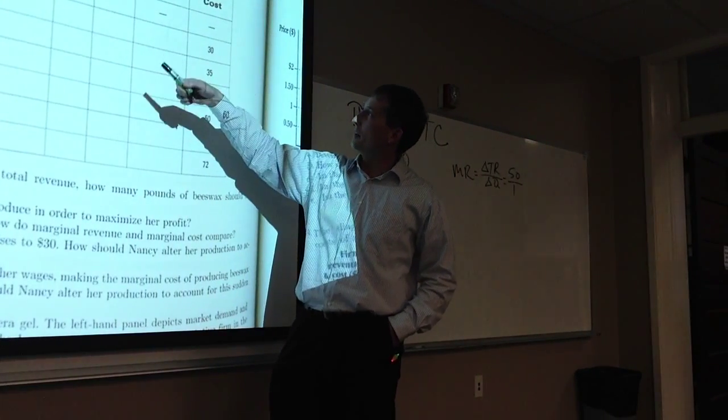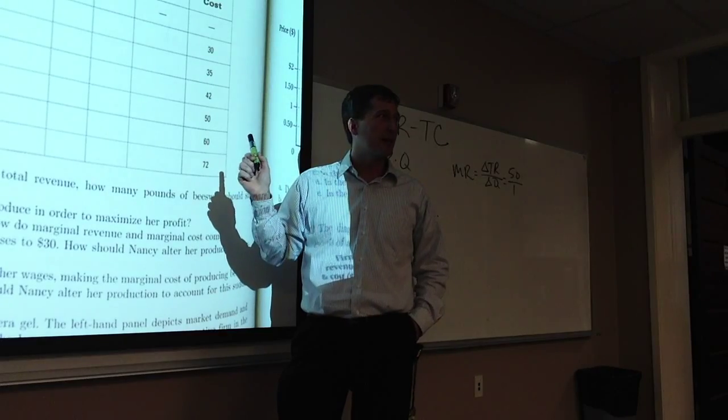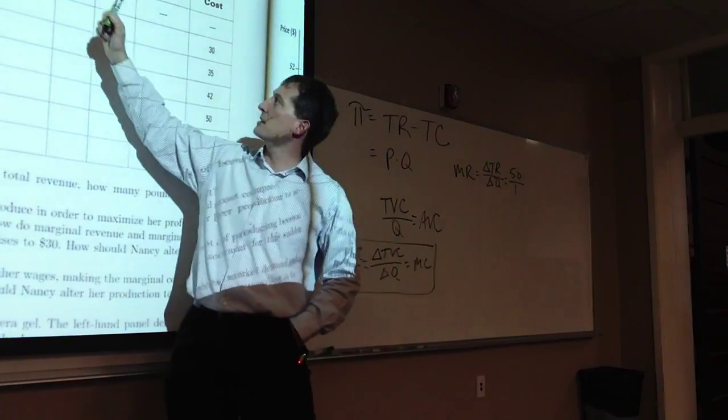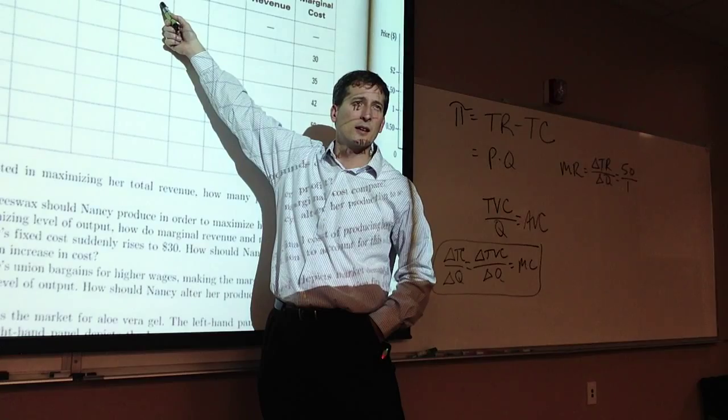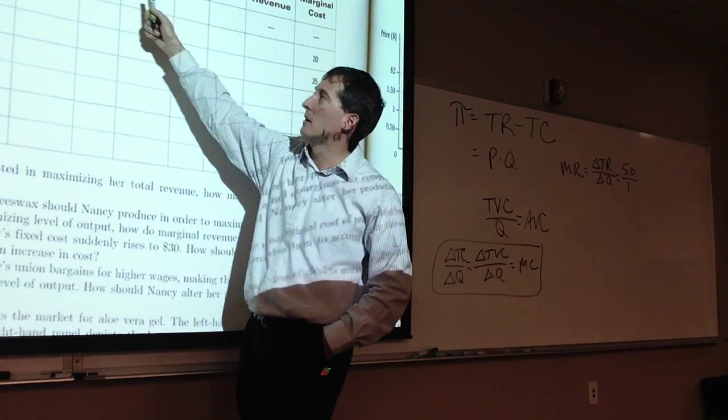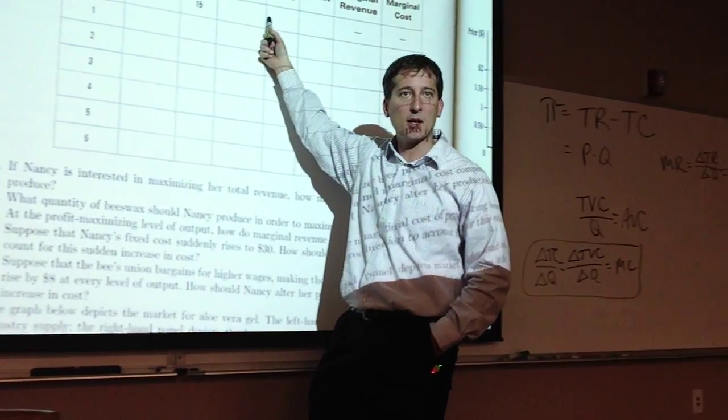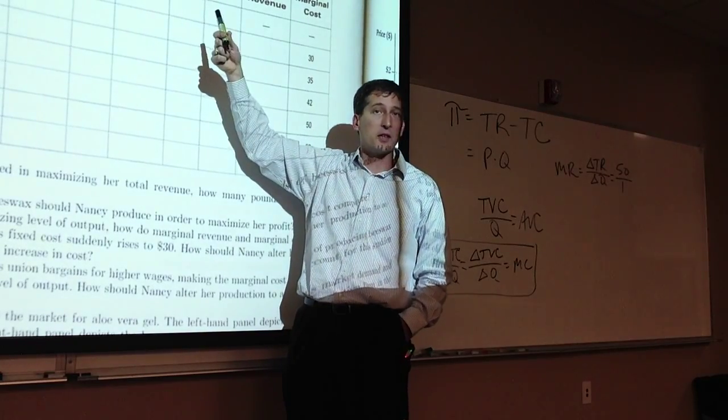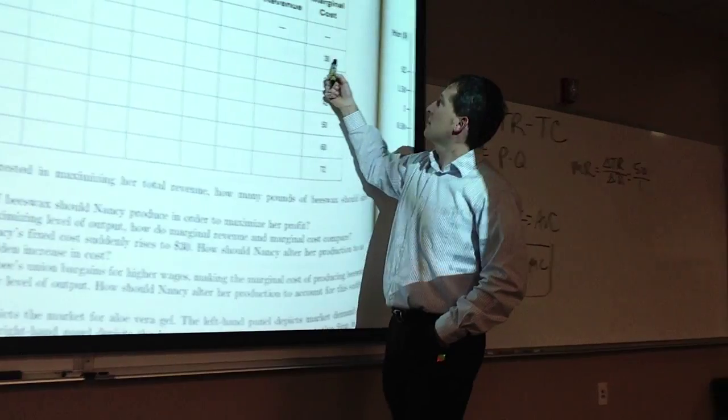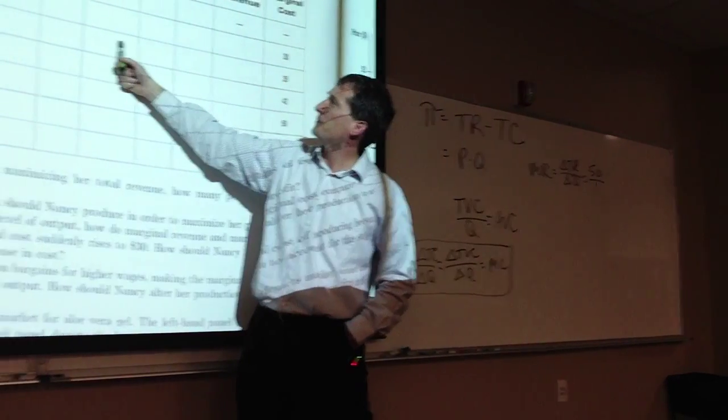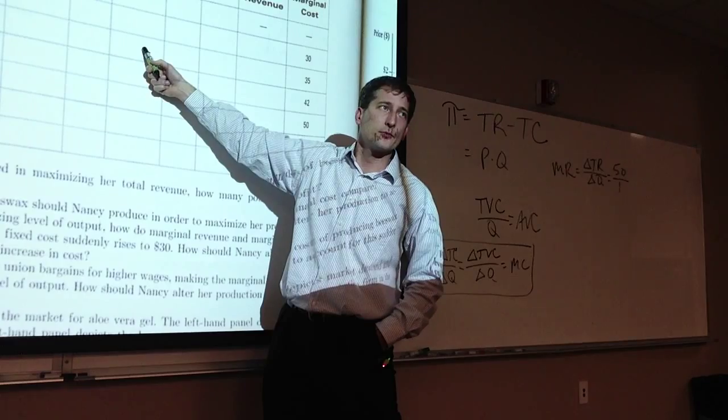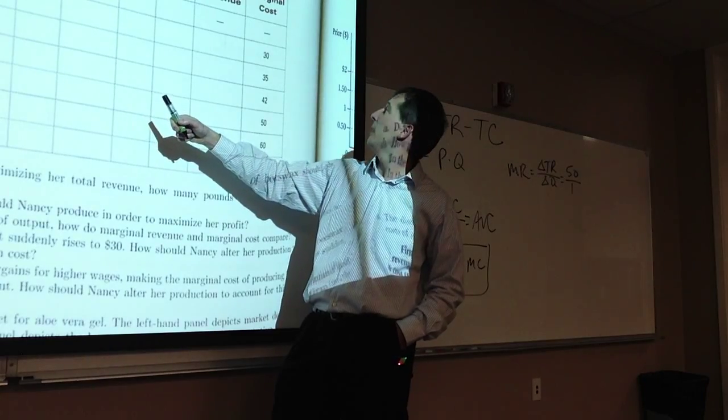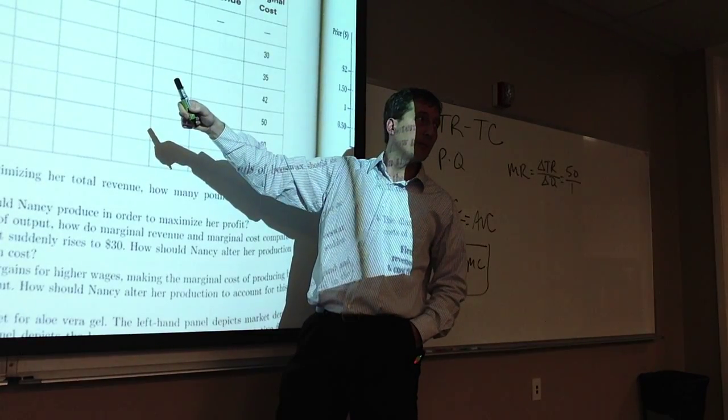We're missing one other key thing when you see a table like this. Total variable cost. How about this box? Zero. Zero quantity, zero variable cost by definition. So total cost is 15, meaning if we shut down we still have $15 worth of cost.